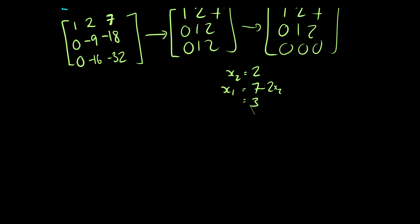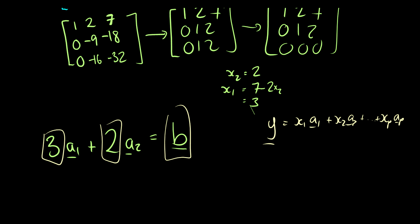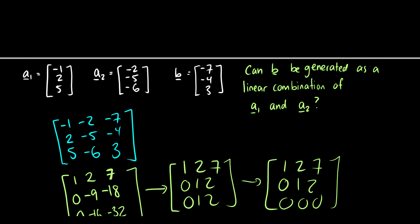So here's what we're saying. We're saying that 3 times a1 plus 2 times a2 is equal to b. Well, why is this? Well, remember a linear combination. So we have before our definition y is just x1 times a1 plus x2 times a2 all the way up to plus xp times ap. Well, here we just have our x1 times a1 plus x2 times a2 equal to our vector b. So 3 of the first vector plus 2 of the second vector makes b. Let's check to see if this is true.